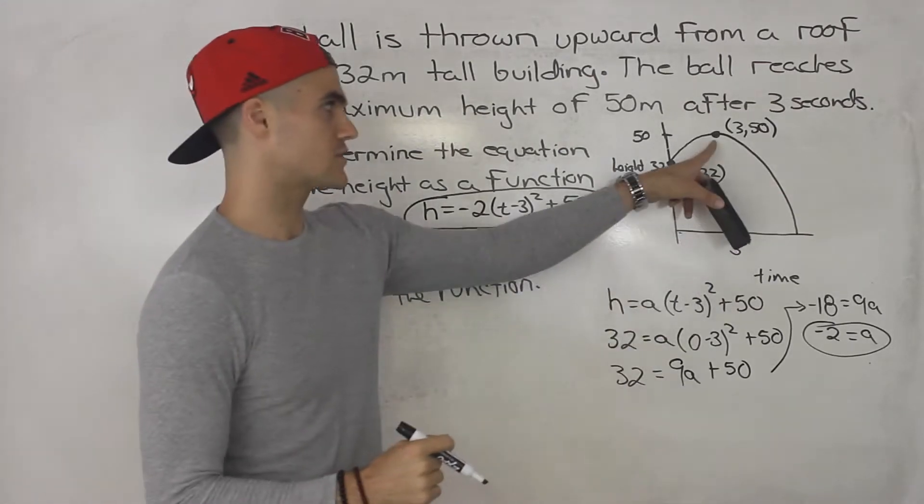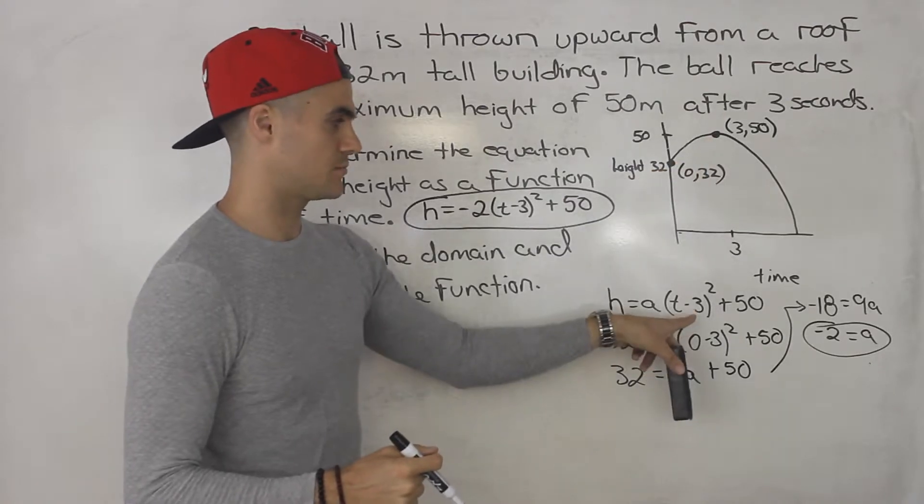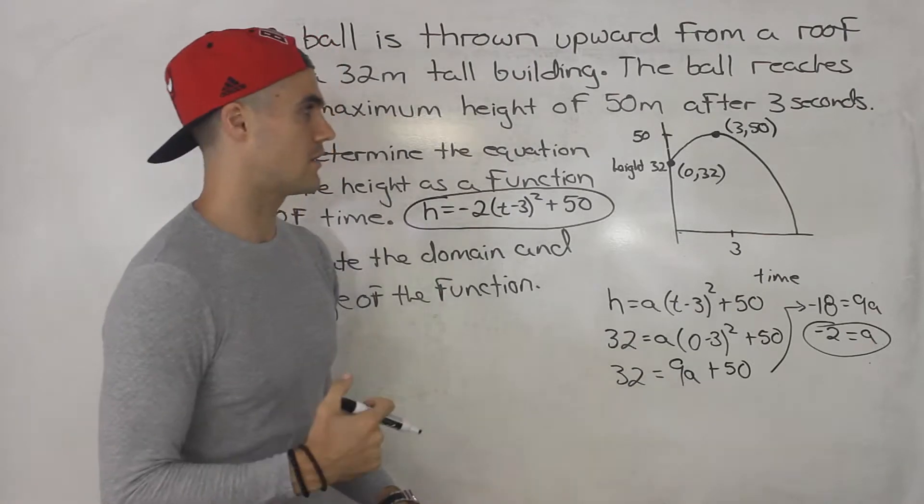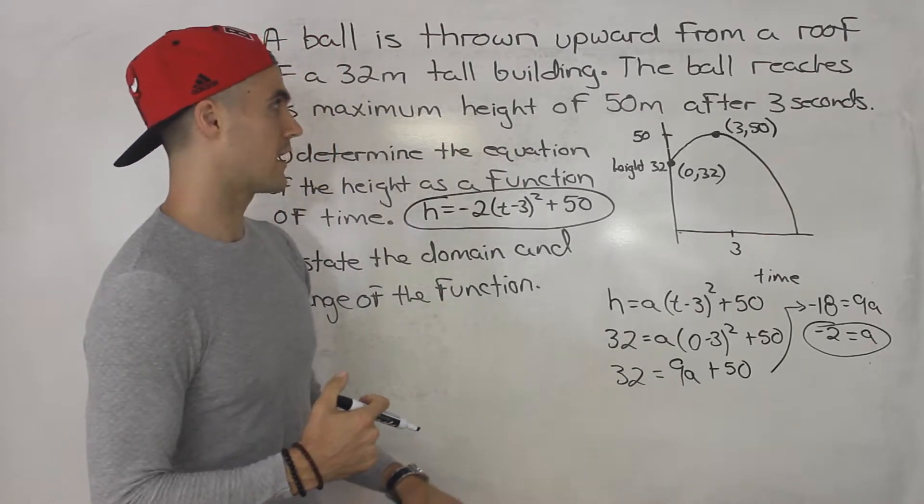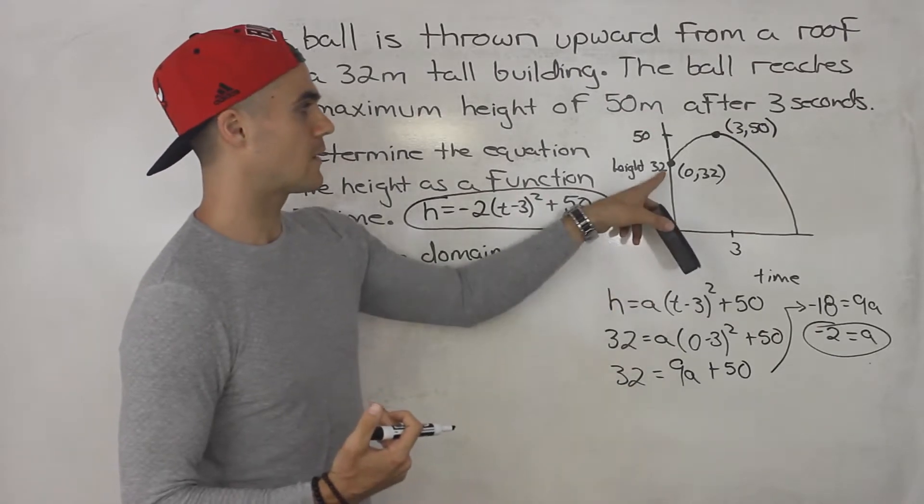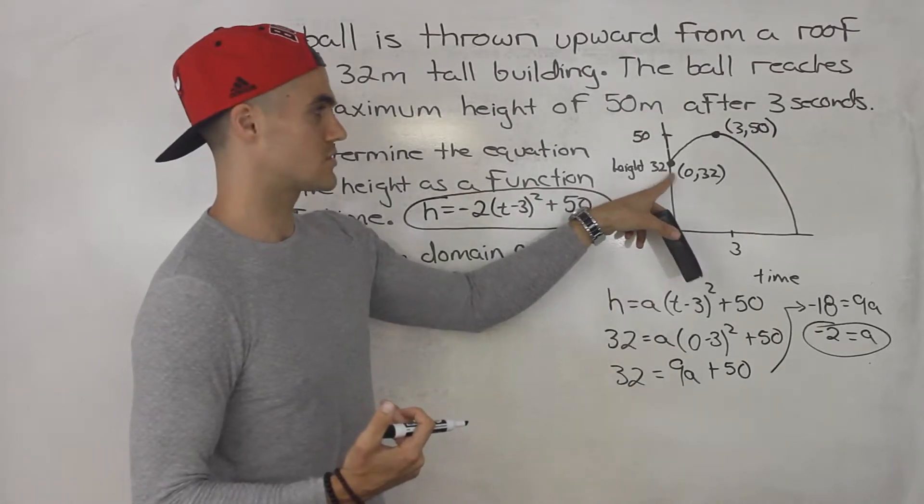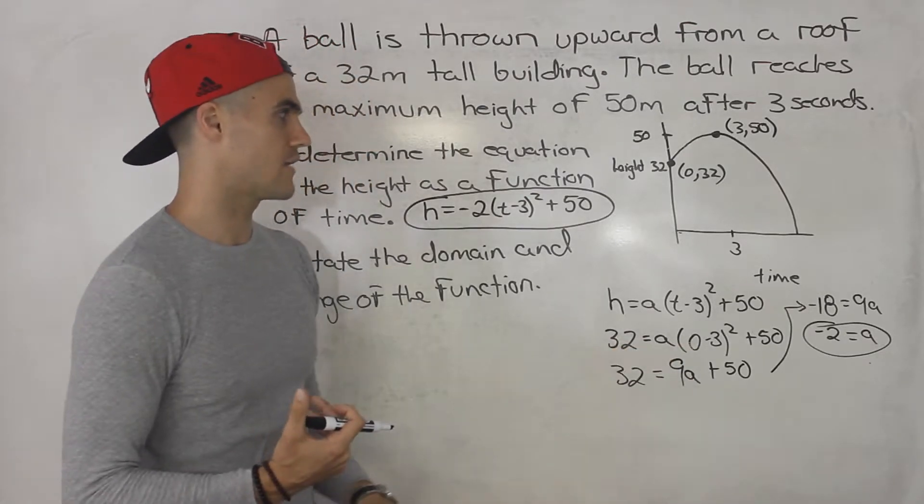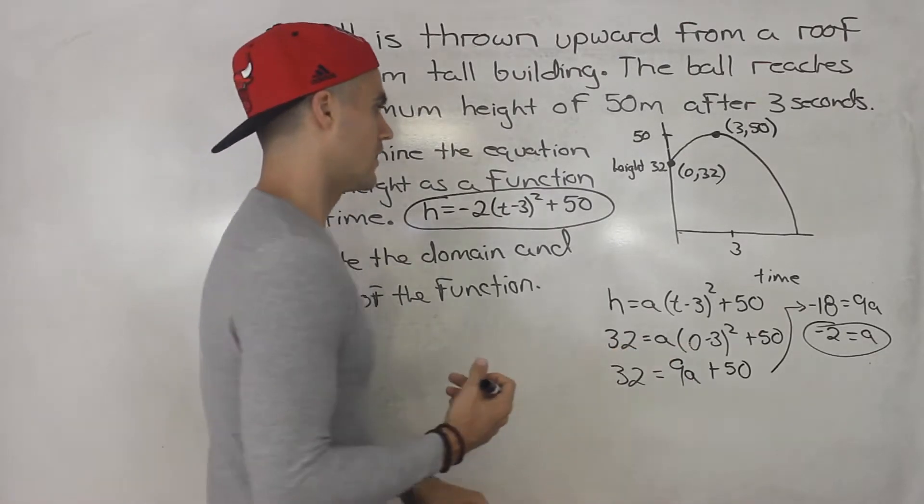So once you have the vertex that they give you, you just want to plug it into vertex form, solve for that a value with another point on the graph. And because they threw it off a 32 meter tall building, we know that that y-intercept is 32. So the point is 0 and 32 that we could plug in and solve for that a value.